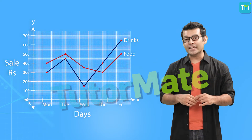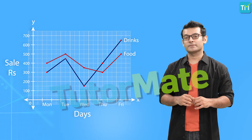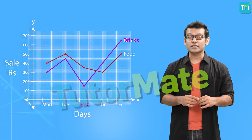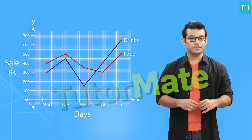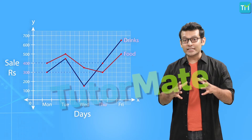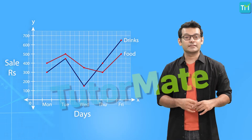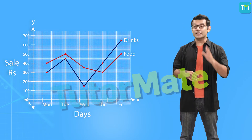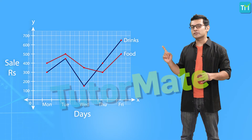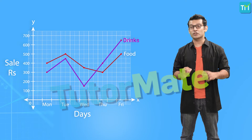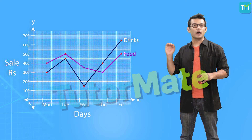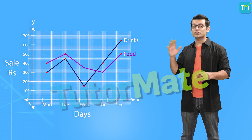On which day was the sale of drinks the lowest? Following the drinks line, the sale was lowest on Wednesday. The next question asks for the total sale of food and drinks on Thursday. The sale of food on Thursday is 300 rupees and that of drinks is 400 rupees, giving a total sale of 700 rupees. Out of food and drinks, which sale shows a steadier trend? The sale of drinks jumps from a low to a high by a large margin daily, whereas the sale of food is quite consistent around the 300 to 500 mark. Hence the food sale is steady.